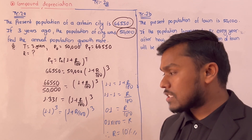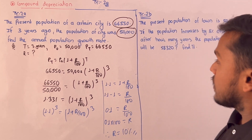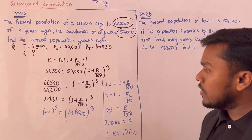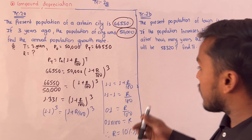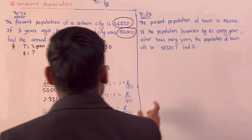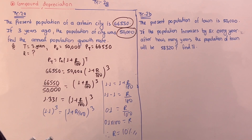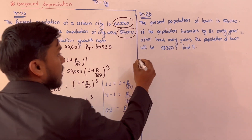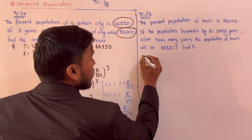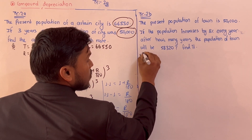0.1 times 100 equals r, therefore r equals 10 percent. So the annual population growth rate is 10%.